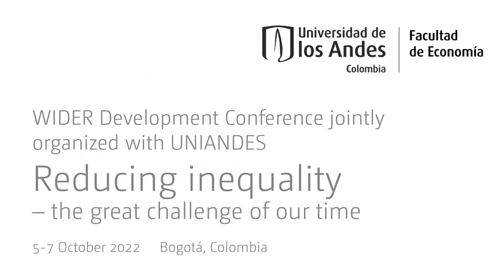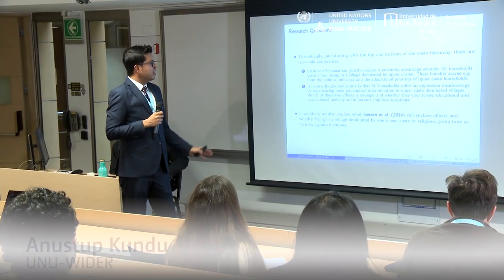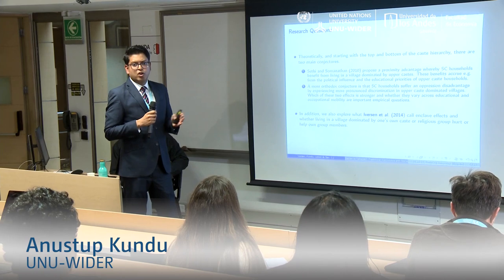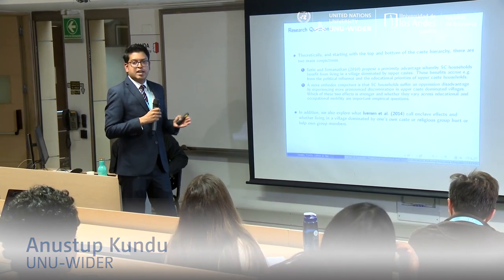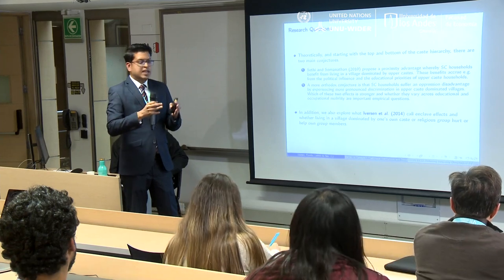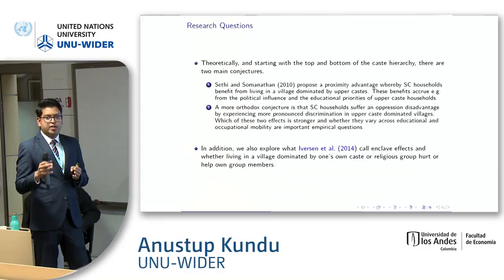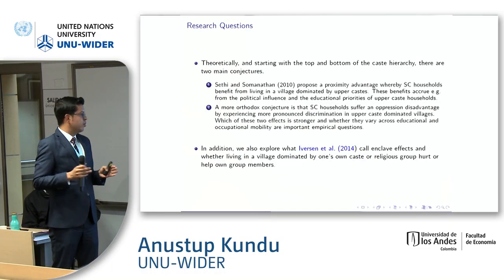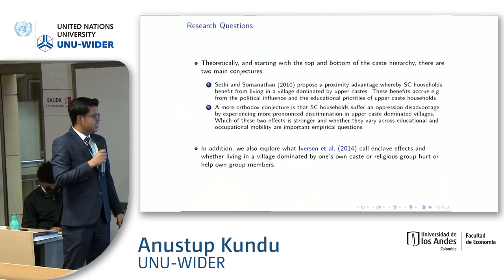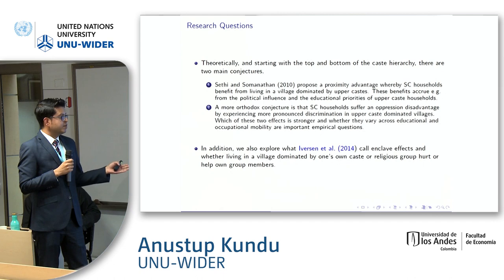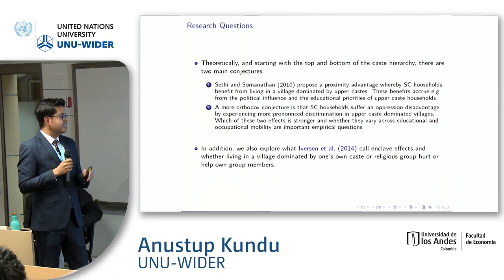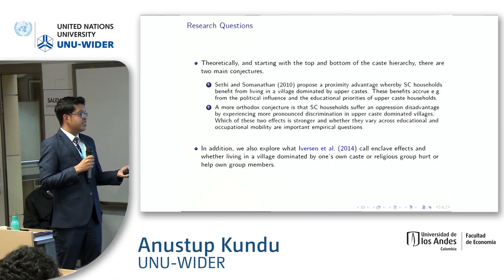So what are we asking here? There are theoretically two points. One conjecture is that if lower caste people are living close to upper caste people, they might get positive benefit from upper caste resources — say education, roads, transport. There is another orthodox conjecture that says if lower caste, or Scheduled Caste people, live closer to upper caste dominated areas, they might suffer oppressive disadvantage.